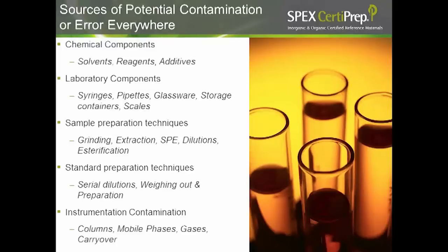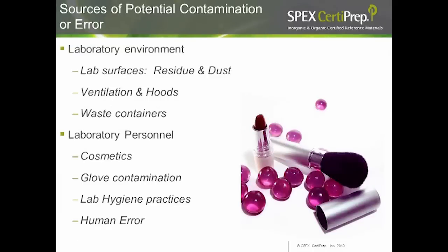Potential sources of contamination or error are everywhere in the lab — from chemical components including solvents, reagents, additives, and raw materials, to laboratory components like syringes, pipettes, and glassware. The way you prepare your samples can add contamination and error. Instrumentation components such as columns, mobile phases, gases, and carryover are also sources. Less obvious sources include lab surfaces with residue and dust, ventilation and hoods that can poorly circulate air, the location and cleanliness of waste containers, and lab personnel — the cosmetics they use, the type of gloves, and human error.